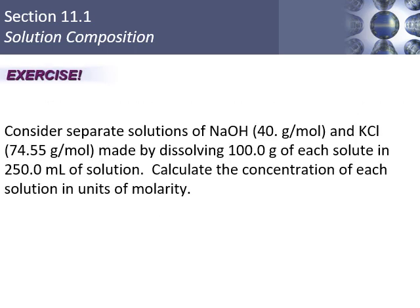NaOH has a molar mass of 40 g/mol (Na = 23, O = 16, H = 1), and KCl is 75 g/mol. We're dissolving each into 250 mL of solution. From 1311, the number of moles = grams ÷ molar mass. For NaOH: 100 g ÷ 40 g/mol = 2.5 moles.